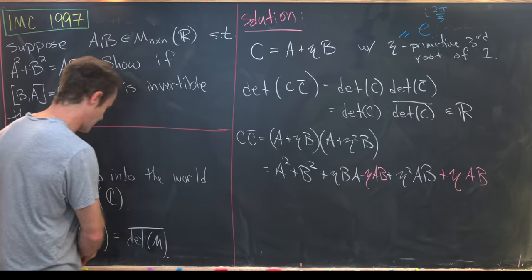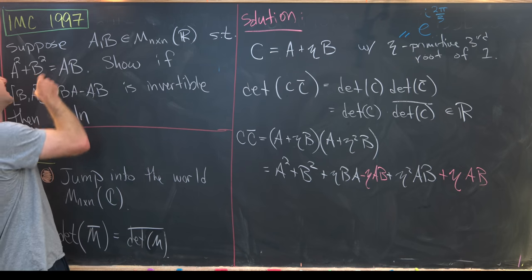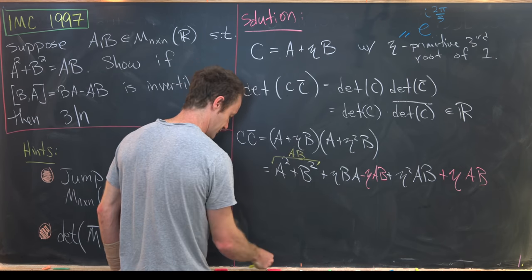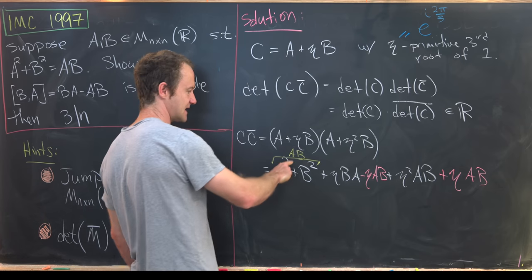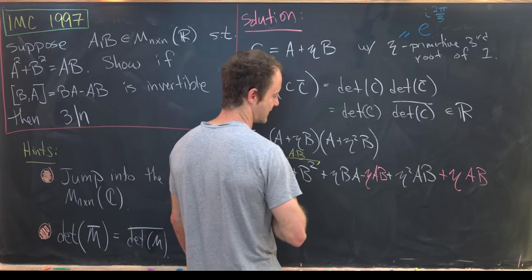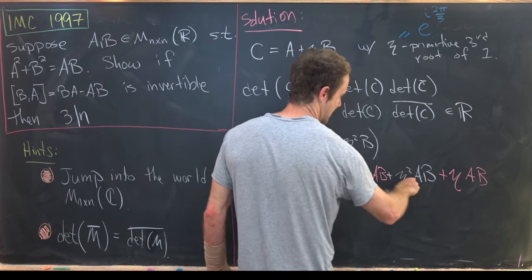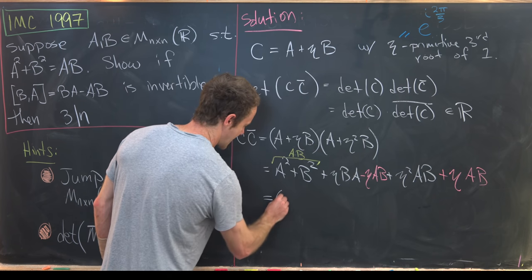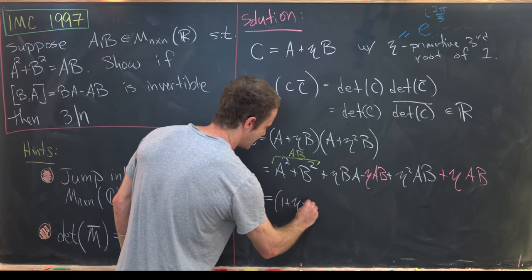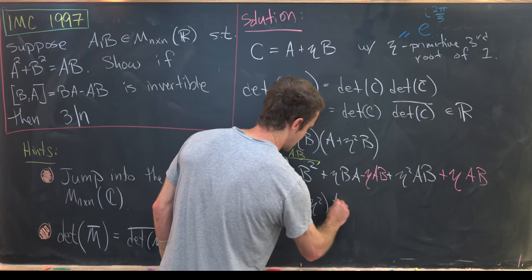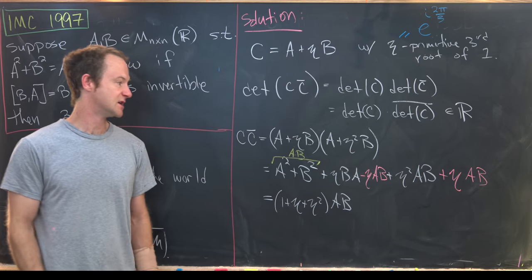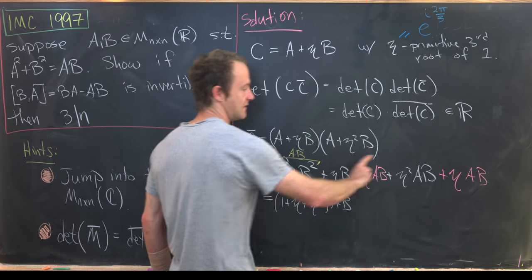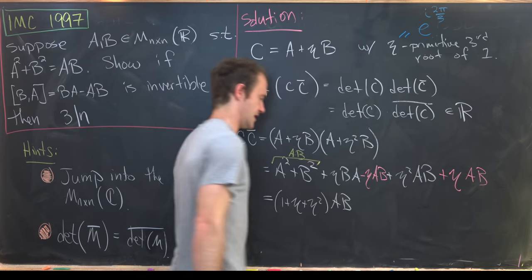Now I'll apply my assumption, which is that A squared plus B squared equals AB to replace this with AB. But now let's notice I've got AB, I've got eta AB, and I've got eta squared AB. So I can rewrite that as one plus eta plus eta squared times AB. So that's from this term right here, this term right here, and this term right here.